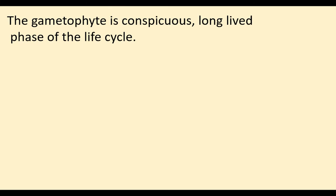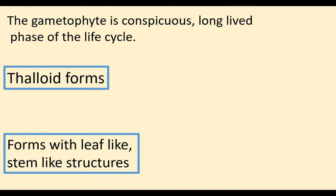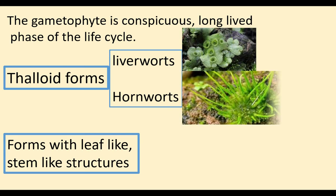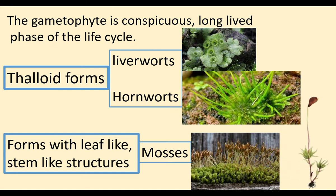The bryophyte gametophyte shows two forms: thalloid forms, and forms with leaf-like and stem-like structures. The first two classes of bryophytes — liverworts and hornworts — show thalloid structures, where the gametophyte is in thalloid form. Leaf-like and stem-like structures are found in mosses, the third group of bryophytes, which also have root-like structures.